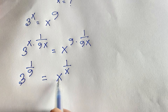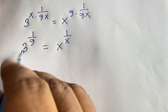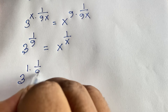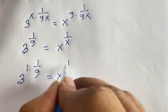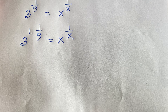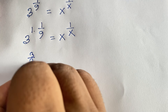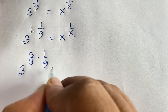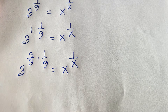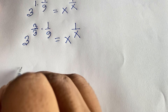Now both sides have the same structure: base to the power (1 over that base). So I can write 3 to the power 1 times 1 over 9, which is 1 over 9. Then I rewrite it as 3 to the power 3 over 3, times 1 over 9, which equals x to the power 1 over x.